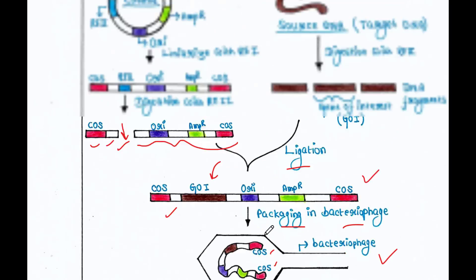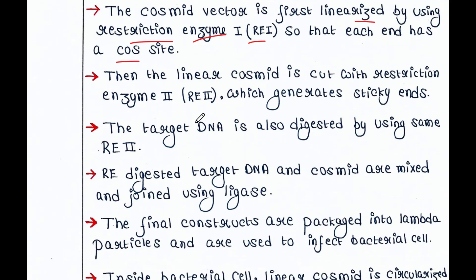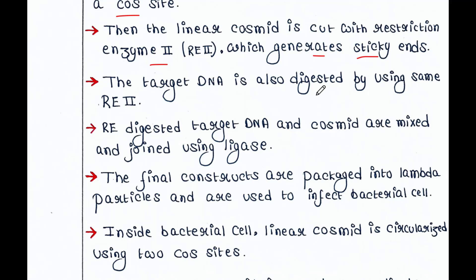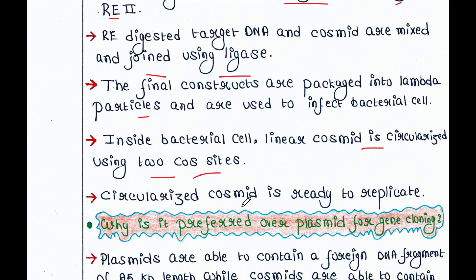To summarize: the Cosmid vector is first linearized using restriction enzyme 1 so that each end has a cos site. The linear Cosmid is then cut with restriction enzyme 2, which generates compatible ends. The target DNA is also digested using the same RE2. The RE2-digested target DNA and Cosmid fragments are mixed and joined using ligase. The final constructs are packaged into lambda particles and used to infect bacterial cells. Inside the bacterial cell, the linear Cosmid is circularized using the two cos sites, and the circularized Cosmid is ready to replicate.